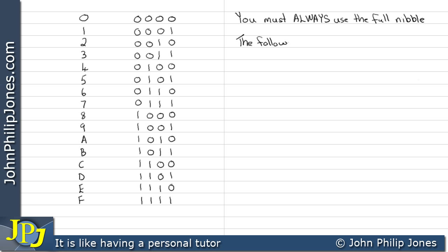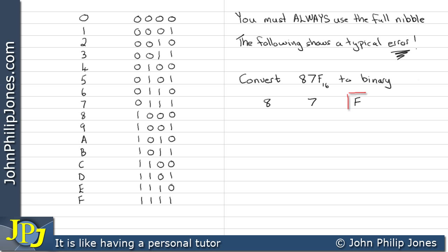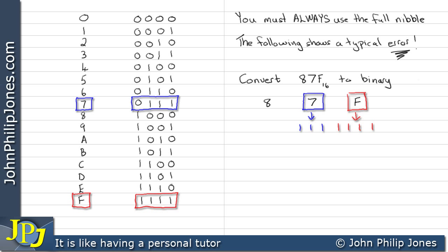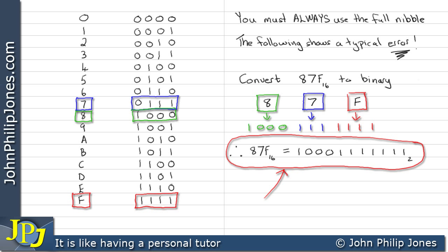When doing this conversion, you must always use the full nibble as it appears in the table. The following shows a typical error people make. Let's look at the example: convert 87F in hexadecimal to binary. We spread the figures out like we've done before. We find F in the table — that's the four ones, so we write that down. Then we look for seven in the table — seven is one, one, one. Then we look for eight, which is here, and we write that down. We might say 87F is one, zero, zero, zero, three ones, and then four ones.